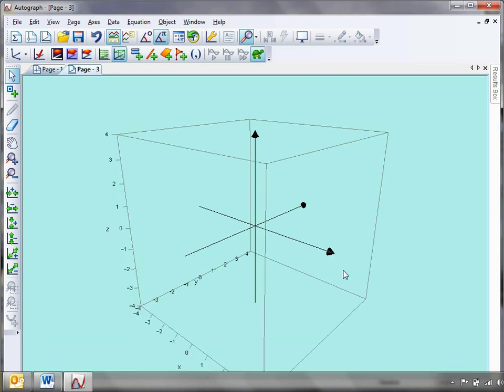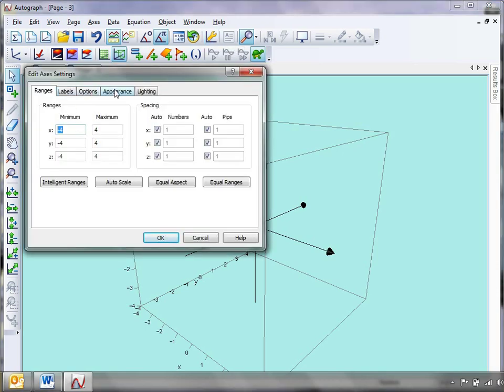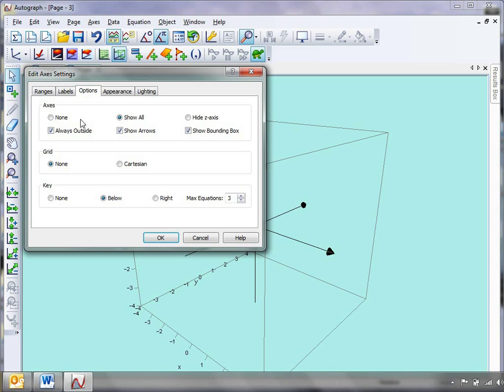Now, as we've talked about with 3D before, I'm not a big fan of having these X, Y's and Z's on the outside. So let's sort that out first. So I'm going to go to my edit axes and I'm just going to go to options. And I'm going to remove the tick of the always outside. And I'm also going to get rid of the bounding box and click OK.